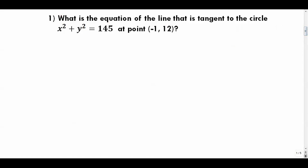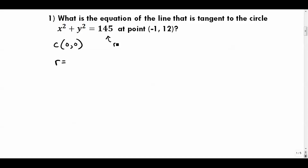Number one: what is the equation of the line that is tangent to this circle at the given point? First, the circle has a center of (0, 0). The equation is x² + y² = 145, so r² = 145, meaning the radius is the square root of 145. Since the square root of 144 is 12, this radius is a little more than 12.